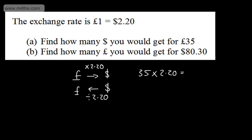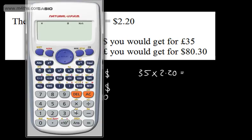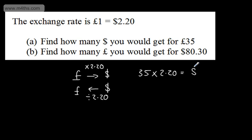If we take the pounds and change them into dollars, we're going to get more. So in the calculator, 35 multiplied by 2.2, and that gives us $77. So if I went into the travel agent or the bank and said I've got £35, how many dollars will you give me? The answer is 77.